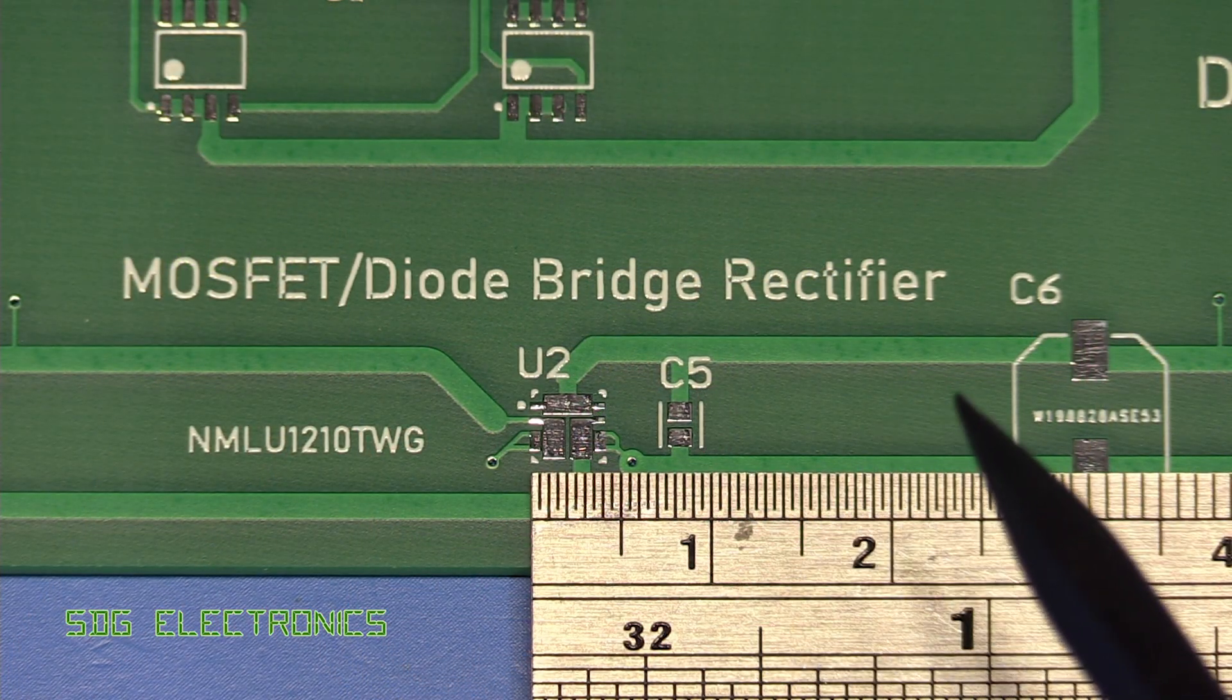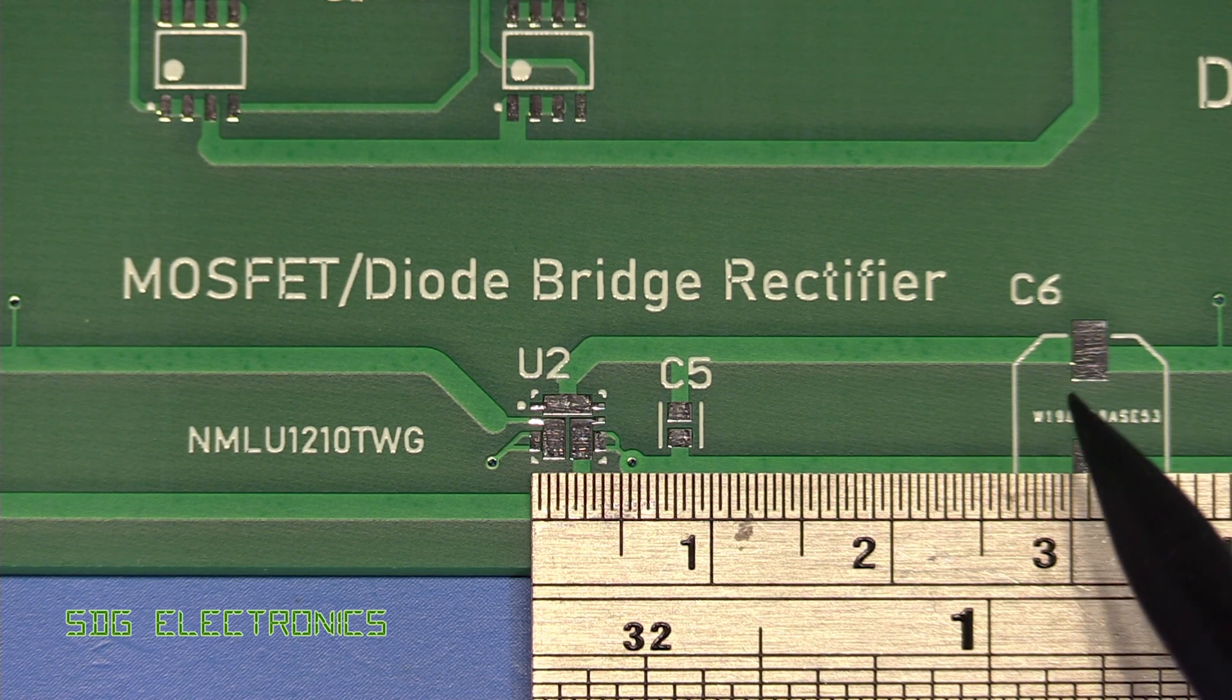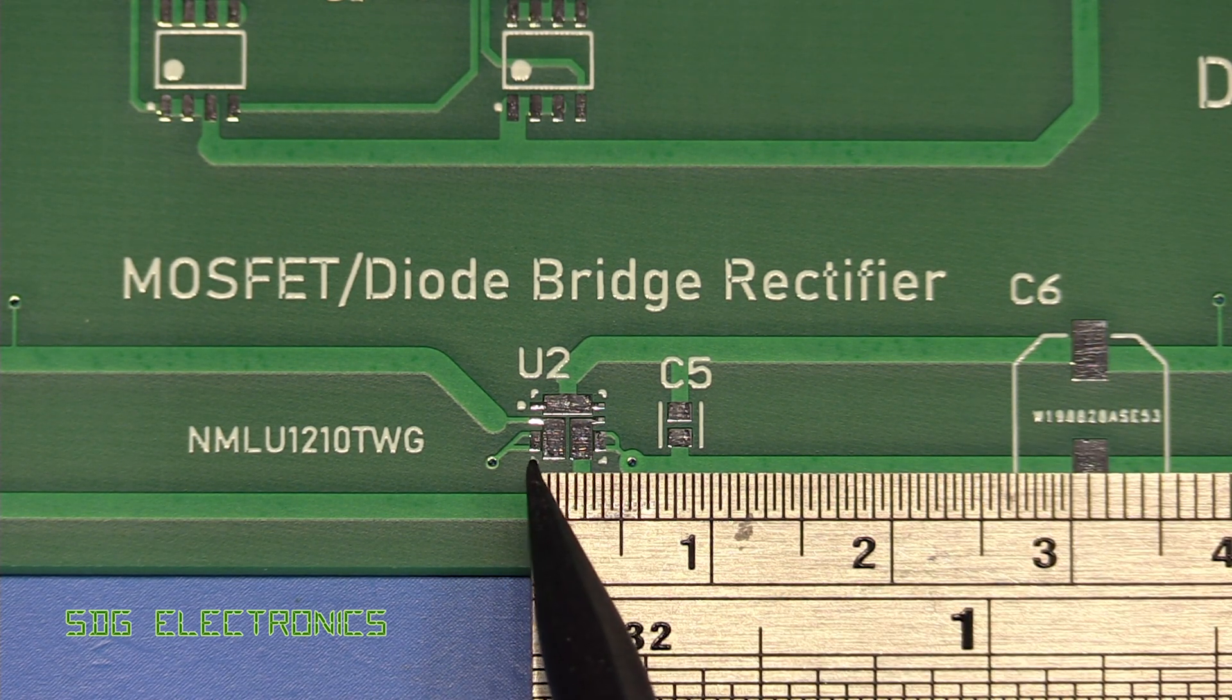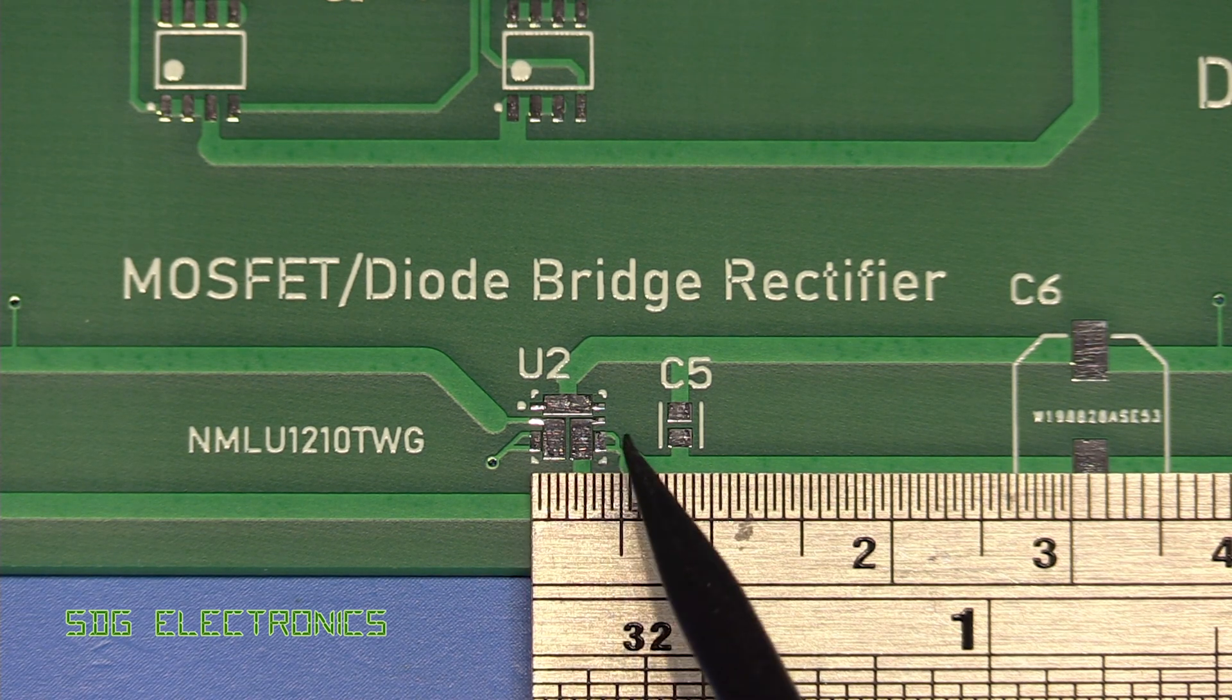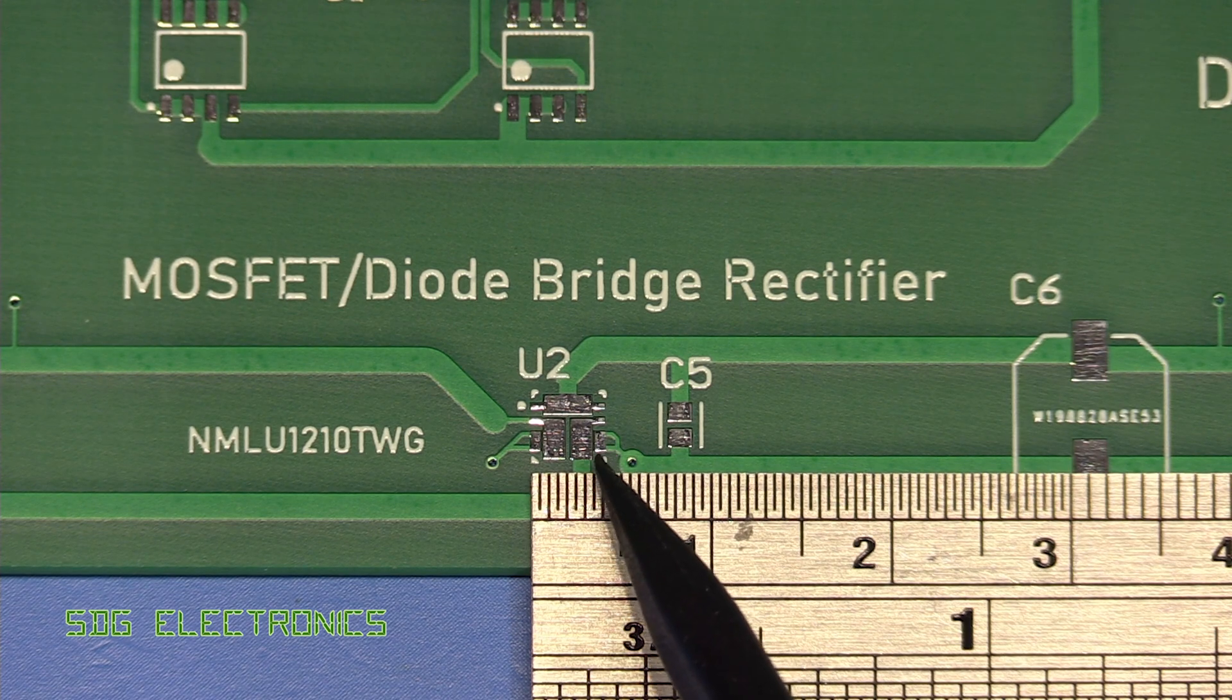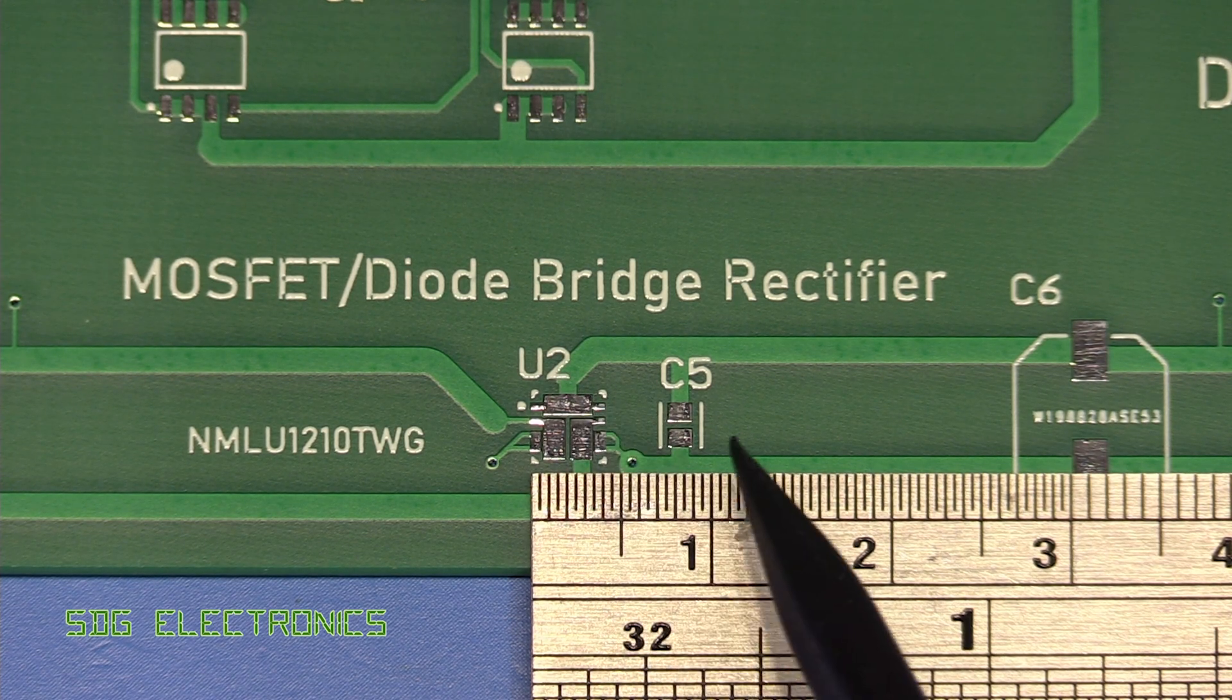We've got quite a wide range of geometries on the PCB from these 10 mm SMD capacitors down to this very fine pitched component here. Absolutely no problem with the registration of the solder mask and the etching of the PCB here, so that all looks really good.